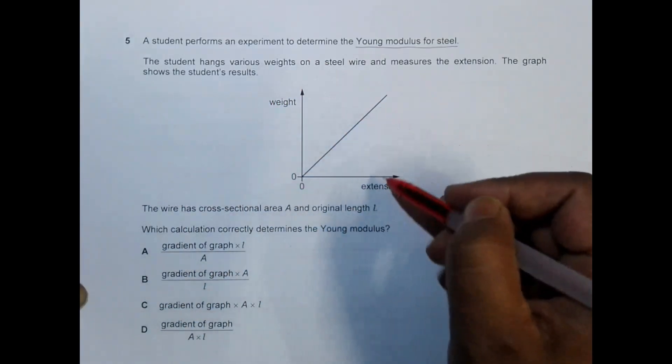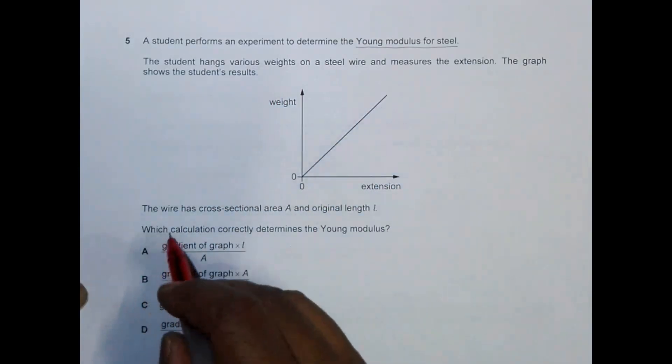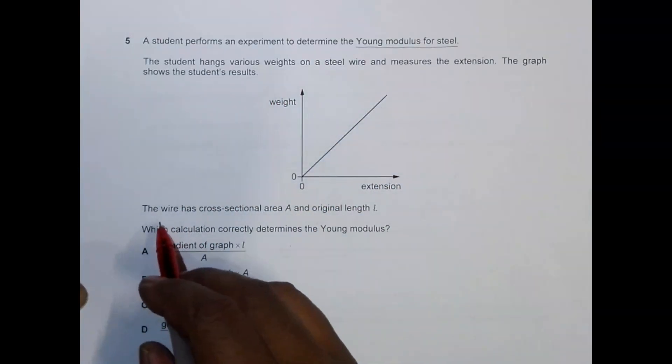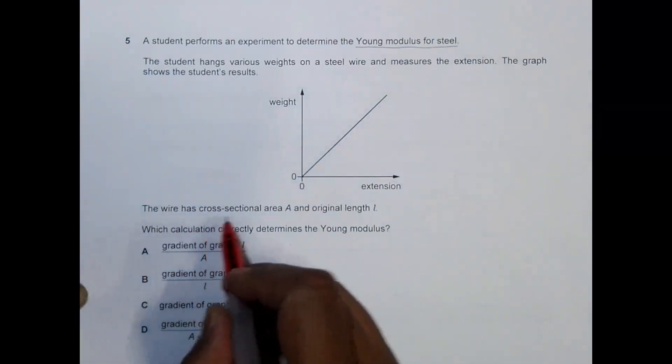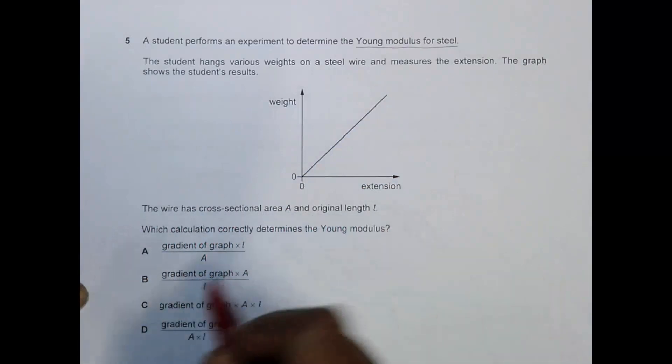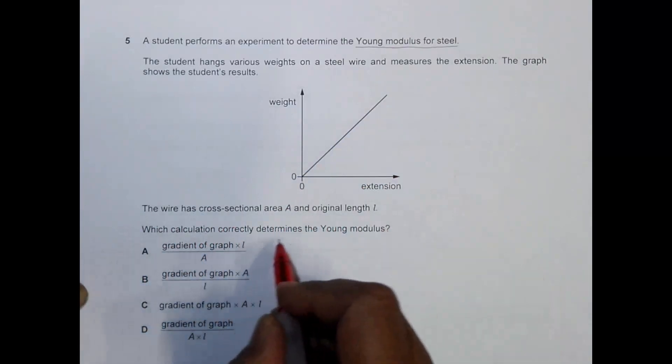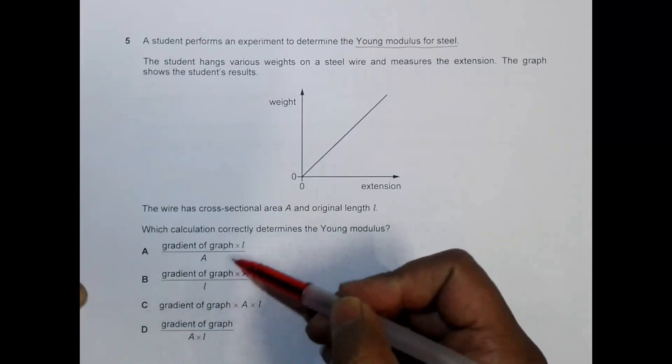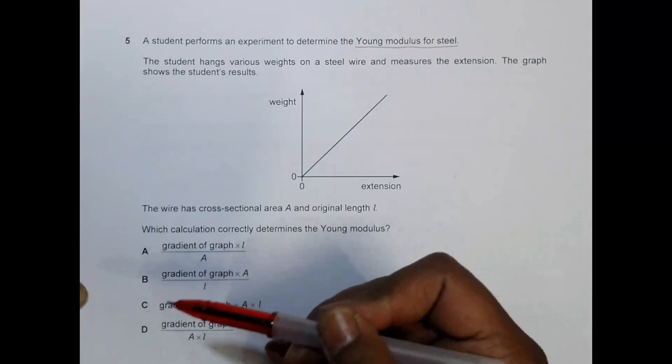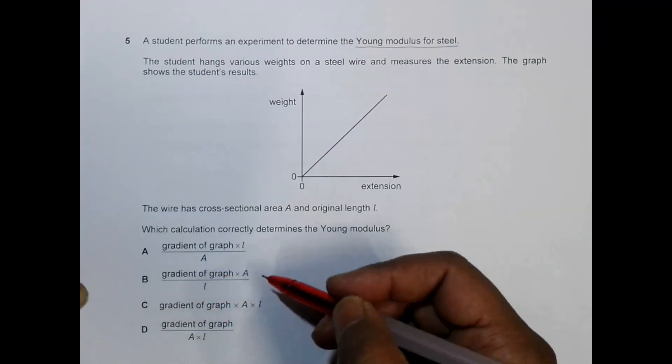The graph shows that the weight is directly proportional to the extension. The wire has cross-sectional area A and original length L. Which calculation correctly determines the Young's modulus? We have to express Young's modulus in terms of the gradient of the graph.